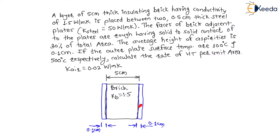For this 0.1 cm on both sides there is a rough surface. The faces of brick adjacent to the steel plates are rough, having solid to solid contact of 30%. The remaining contact will be with air. Only 30% is solid to solid contact, and after that there are steel plates on both sides with 0.5 cm thickness.